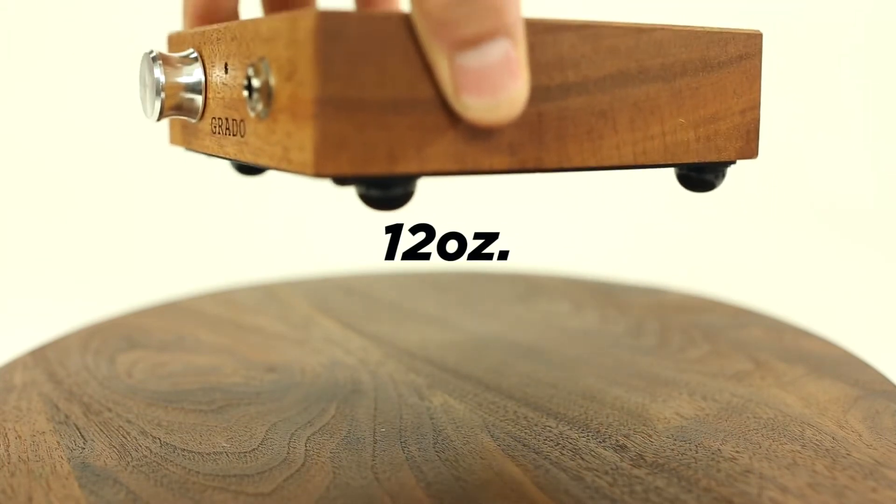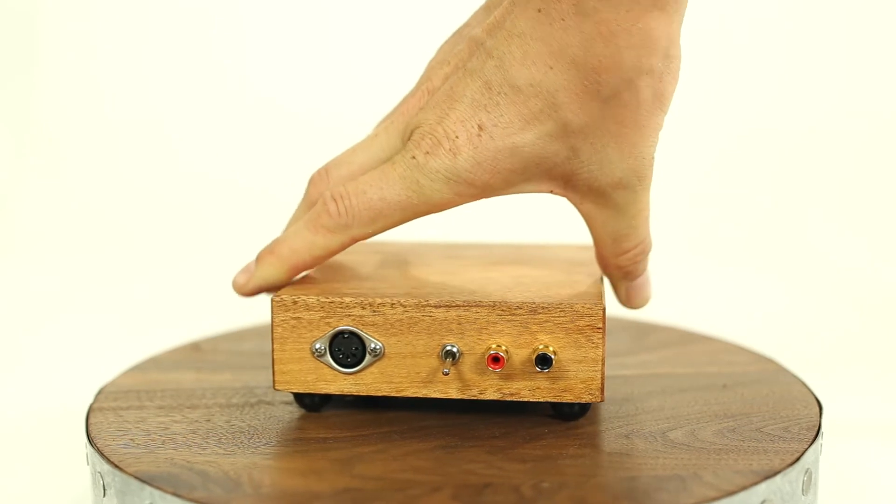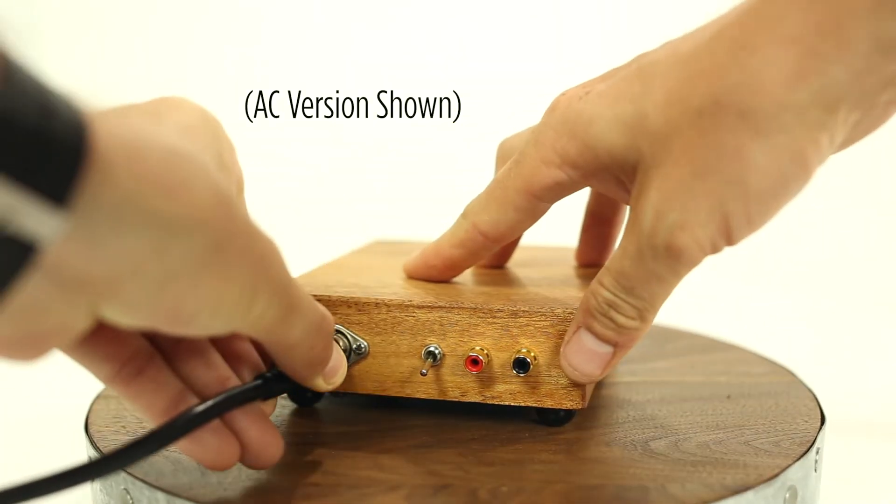The RA-1 is available in an AC version or can be powered by two 9-volt batteries that will drive the amp for 40 to 50 hours of listening pleasure.